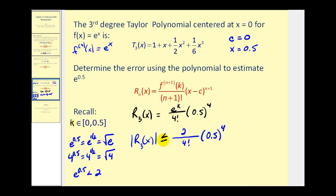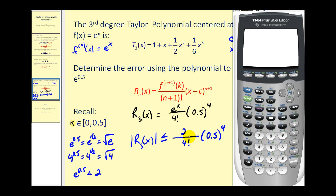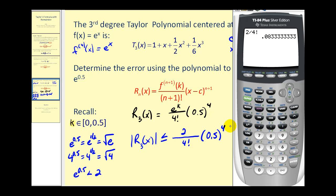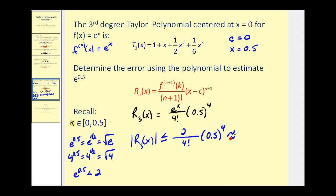The error will always be less than or equal to this value. Evaluating on the calculator: two divided by four factorial, multiplied by 0.5 to the fourth, gives approximately 0.0052. So when using this Taylor polynomial to approximate e to the 0.5, the error will always be less than or equal to 0.0052, showing this is a very good approximation. I hope you found this video helpful. Thank you for watching.